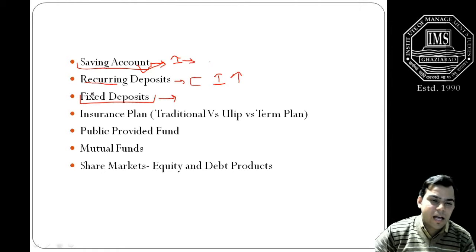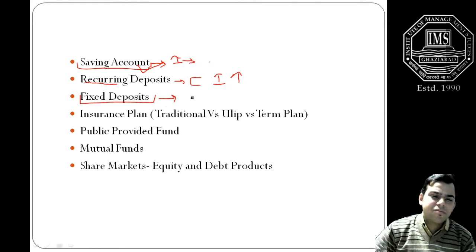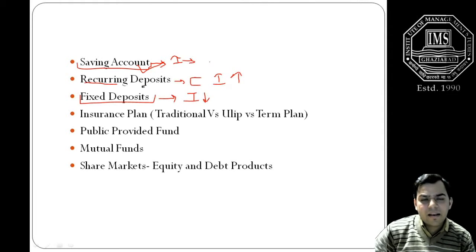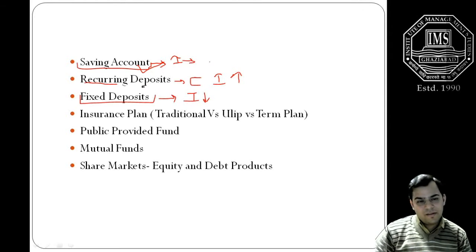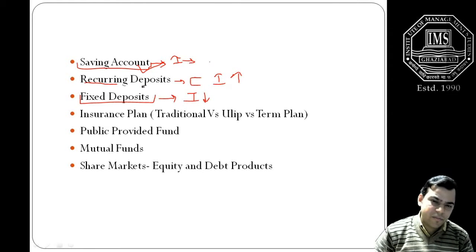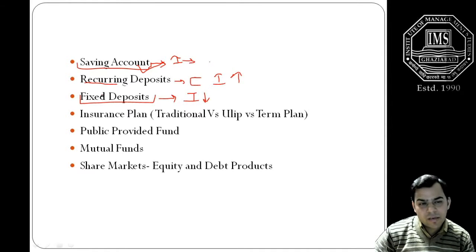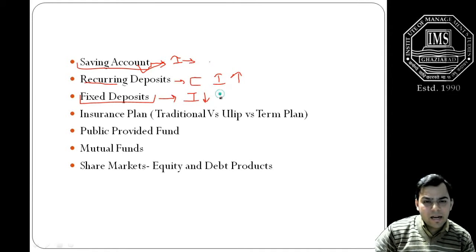Next important component which is there in your small investment avenue is the fixed deposits. However, the fixed deposits are losing the charm because the interest rate on the fixed deposits are reducing day by day, but still most of the people in India who don't have very much access to the financial market will go for the fixed deposits.